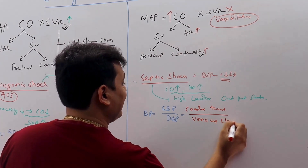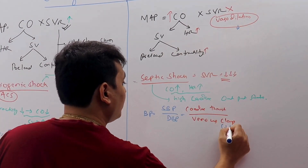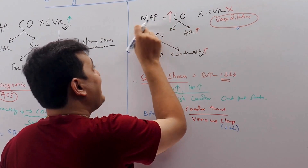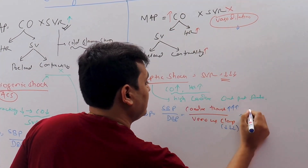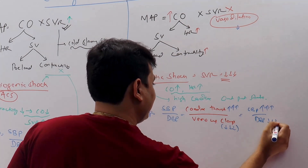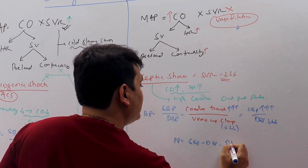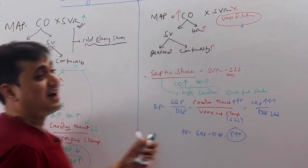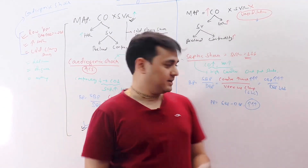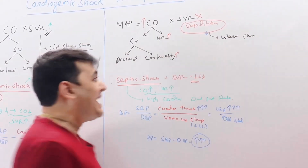In septic shock, SVR is very low, so cardiac output increases to compensate. This means cardiac thrust increases, so SBP increases, while DBP decreases due to vasodilation. Pulse pressure, which equals SBP minus DBP, therefore increases. You may find blood pressures like 150/60 or 170/60 — a wide, high pulse pressure gap.